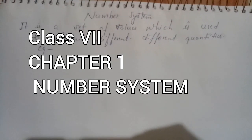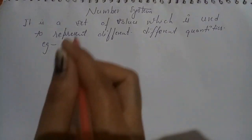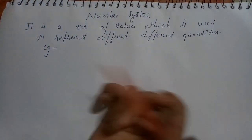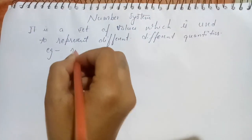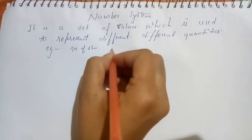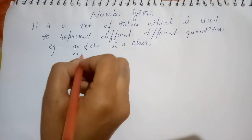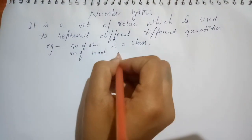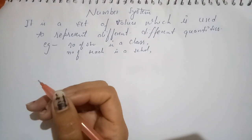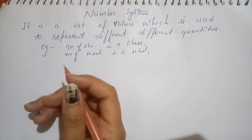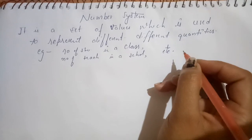Good morning everyone. Today I am here to discuss the number systems. A number system is a set of values which is used to represent different quantities, for example, number of students in a class, number of teachers in a school, number of viewers on a YouTube channel, and number of flats in a building, etc.